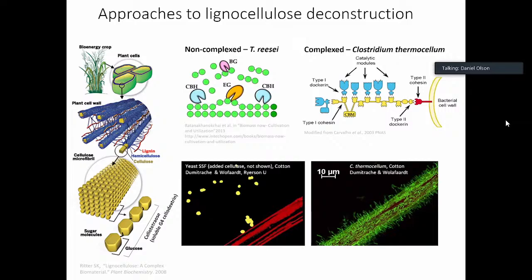Another big advantage of thermophilic bacteria, or really natively cellulolytic bacteria, is that they're very good at breaking down cellulose because they have a special multi-enzyme machine called a cellulosome. On the right is an example of a cellulosome from Clostridium thermocellum. You have the bacterial cell wall with a cohesive protein, a primary scaffold in yellow, and catalytic modules indicated in blue. This whole assembly sits on the outside of the organism, deploys, and the cellulose-binding module sticks to the cellulose.